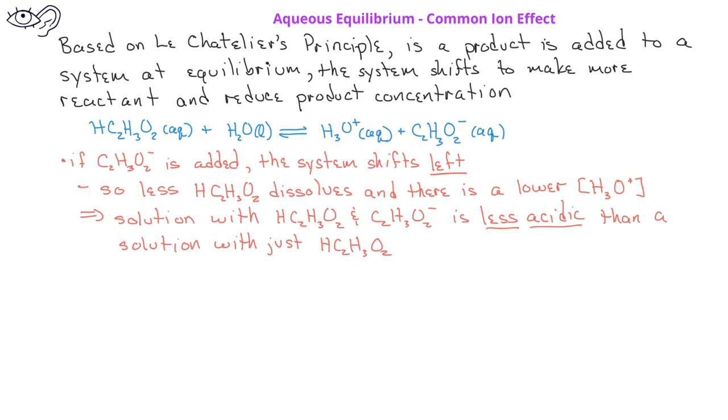You should recognize that the above equation, with both acetic acid and its conjugate base acetate ion present, is actually a buffer solution composed of a weak acid and its conjugate base. This example demonstrates what's known as the common ion effect, since the solution contains two compounds that share a common ion.